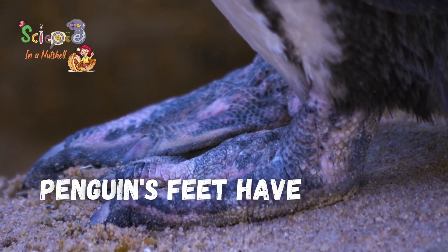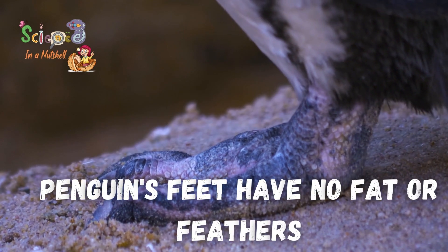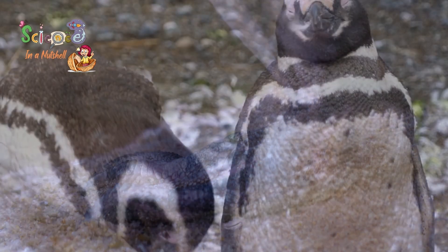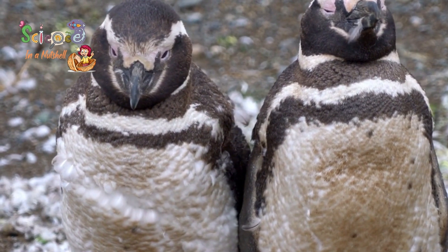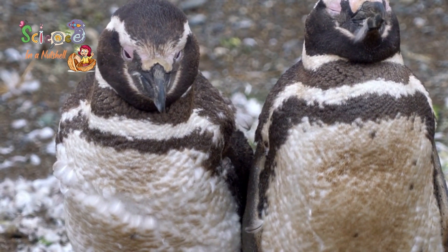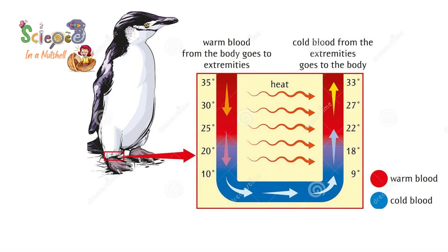Although the penguin's feet have no feathers and no fat, it can stand on the ice all day. This happens due to the way blood moves through blood vessels in the penguin's feet. Blood vessels bring cold blood from the feet up to the body, while other blood vessels bring warm blood down from the feather-coated body. The warm blood vessels weave around the cold blood vessels, heating the cold blood so that warmth transfers back to the penguin's feet.